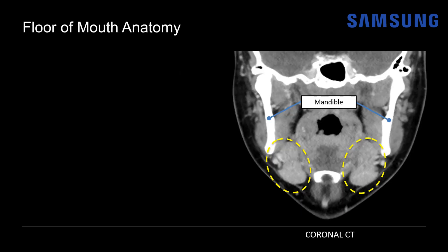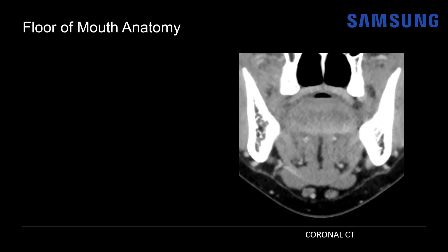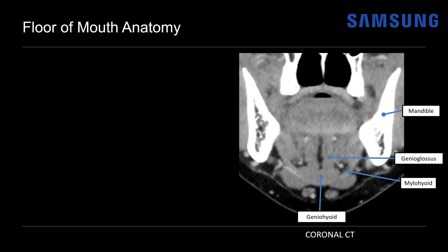Now let's go into more detail with the floor of mouth anatomy, which we can see quite well on ultrasound and which really helps make the correct diagnosis. Returning to our coronal CT image, if we move a bit more anteriorly we have a view showing normal floor of mouth anatomic landmarks. There is the mandible, the mylohyoid muscle — which acts as a sling or hammock at the floor of the mouth — the geniohyoid muscle, the paired genioglossus muscles just superior to that, and the anterior belly of the digastric muscles inferior to the mylohyoid. We can also see some submental lymph nodes in that area.